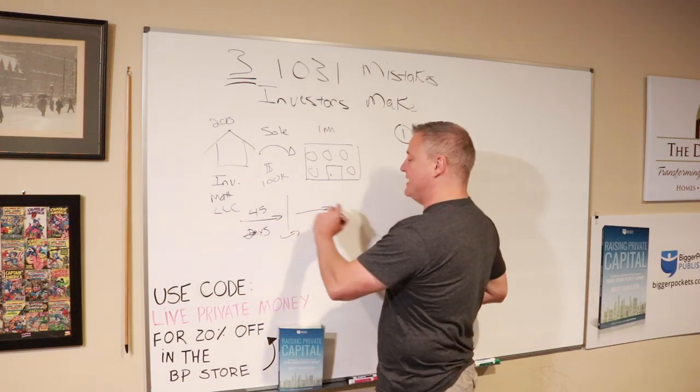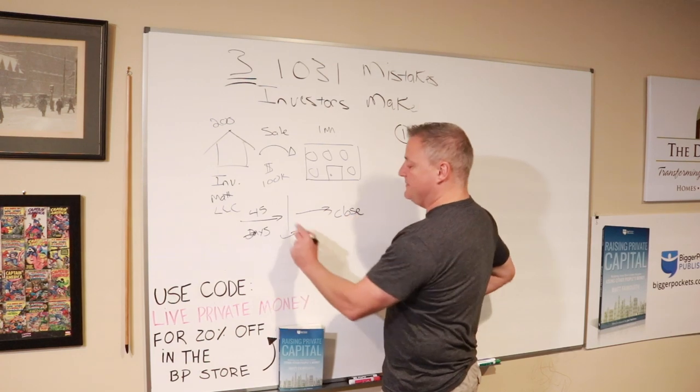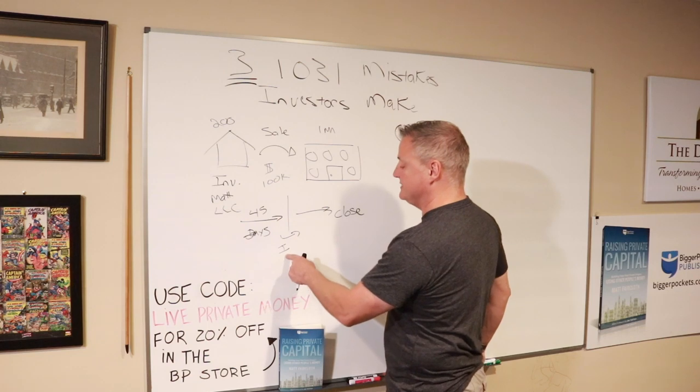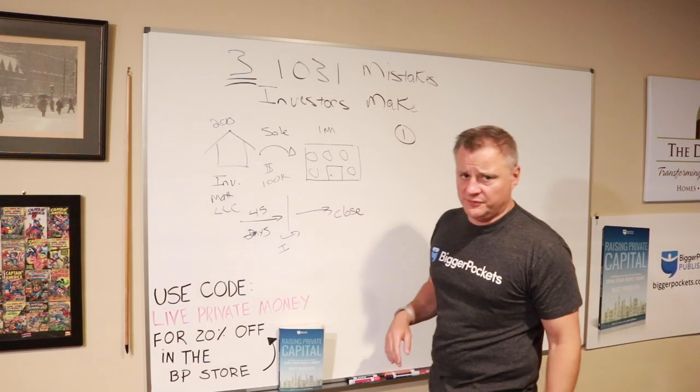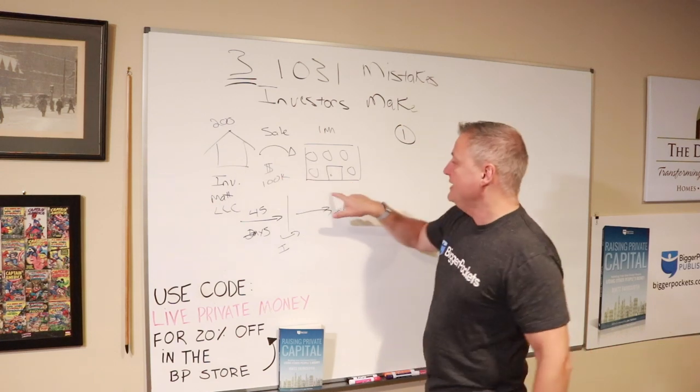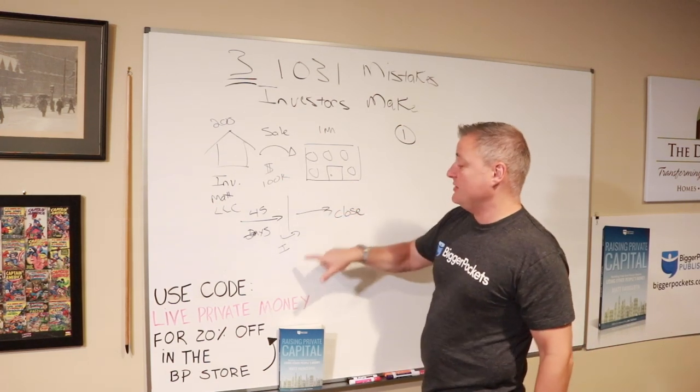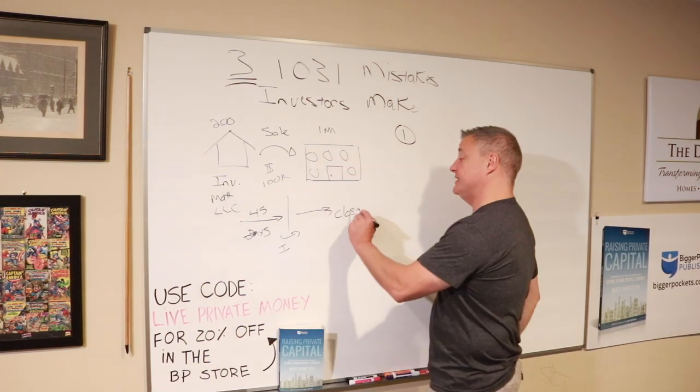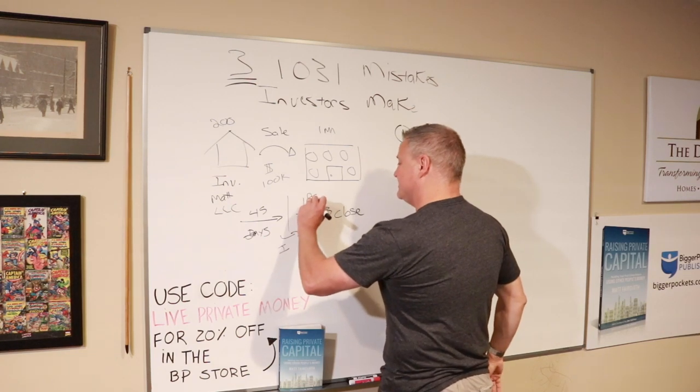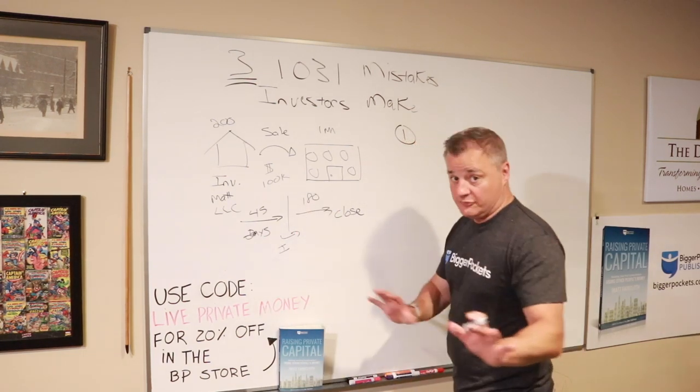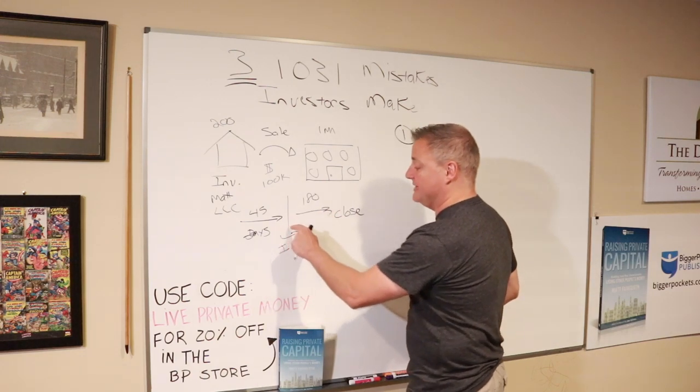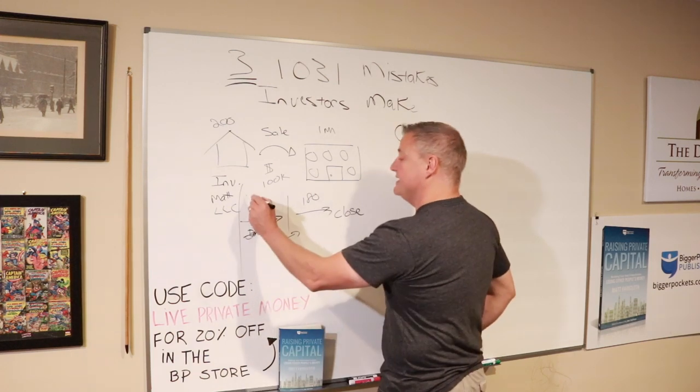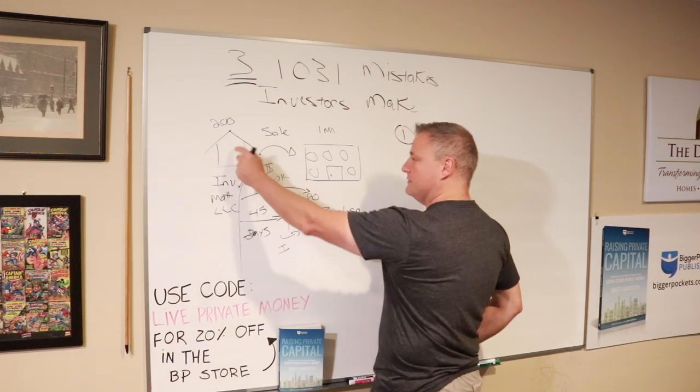Now the next timeline is 180 days. People get this confused, and this is another mistake that people make. This is 180 days that I actually have to close. At 45 days I have to identify the property, that's called nominating. Some people think wrongly that this 180 days begins at the point of nomination. That's not true. This 180 days actually begins at the time that you sell this property.